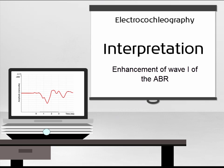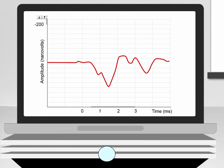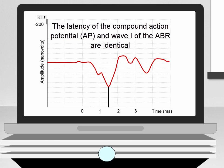Another application of the electrocochliography test in adults is for the enhancement of wave 1 in the ABR. The latency of the action potential recorded in the ECOG is identical to the latency of the wave 1 of the ABR.